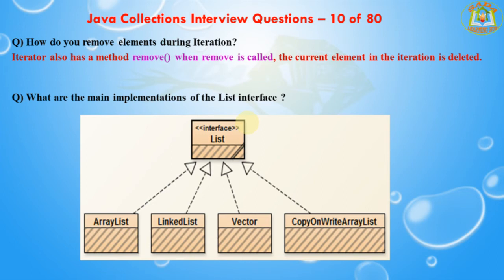The next question: What are the main implementations of the List interface? The main implementations are: ArrayList — a resizable array implementation of the List interface and the best all-around implementation; Vector — a synchronized resizable array implementation with additional legacy methods; LinkedList — a doubly linked list implementation that may provide better performance than ArrayList if elements are frequently inserted or deleted, and is useful for queues and double-ended queues; and CopyOnWriteArrayList.